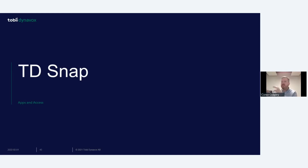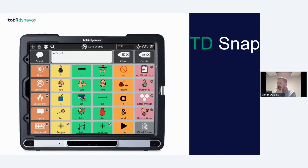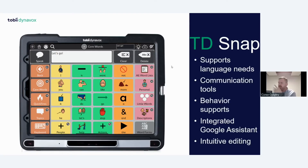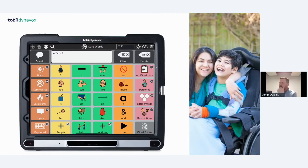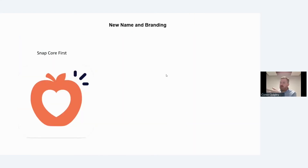That covers TD Talk. If you want to go into more detail, we can book meetings. TD Snap won't be covered in full today as there are other webinars and resources for it. However, one key feature worth highlighting for the TD Pilot is TD Snap's integrated Google Assistant — it's built in, so you don't need a separate Google Home speaker. Anything Google-compatible in terms of smart devices will work with TD Snap for environmental control, which would be a good option for Mark who is a symbol communicator.